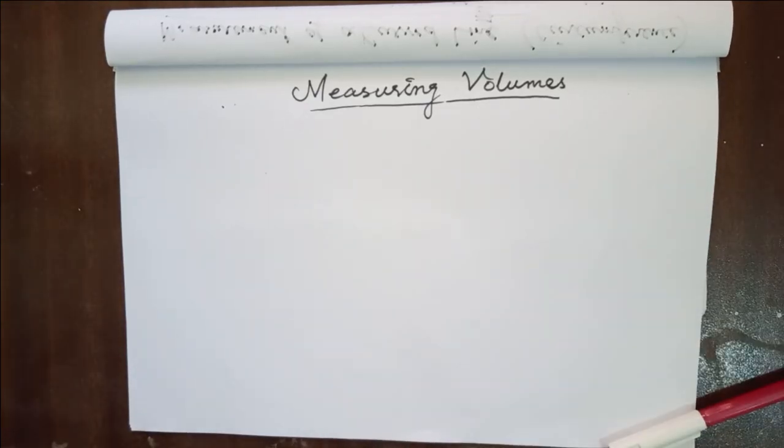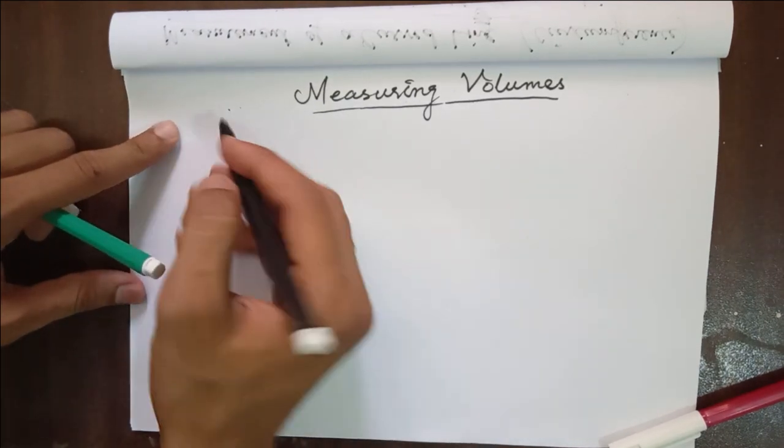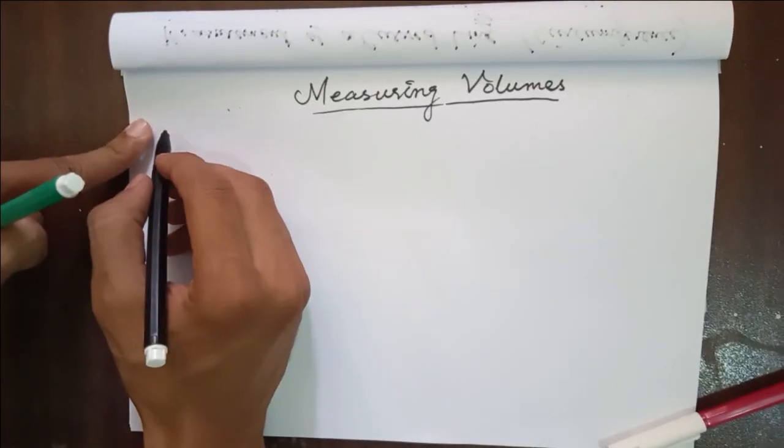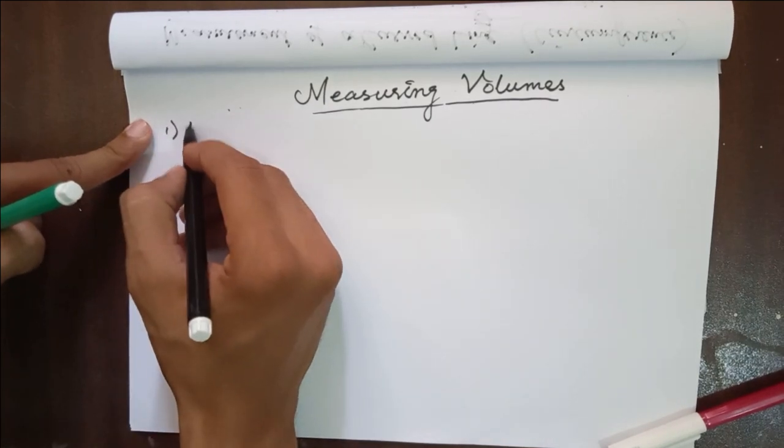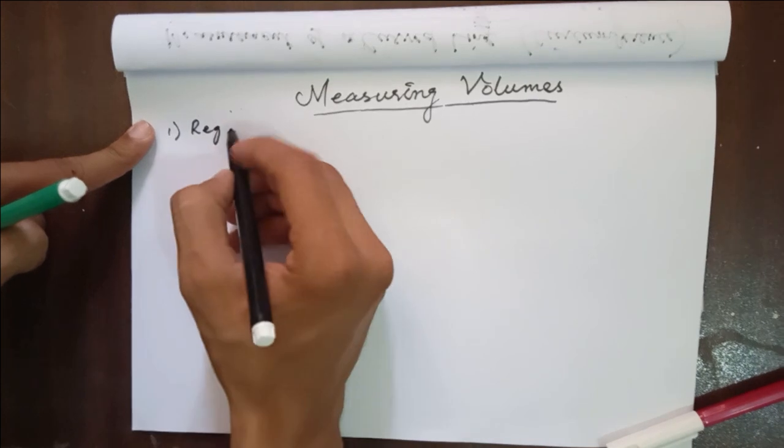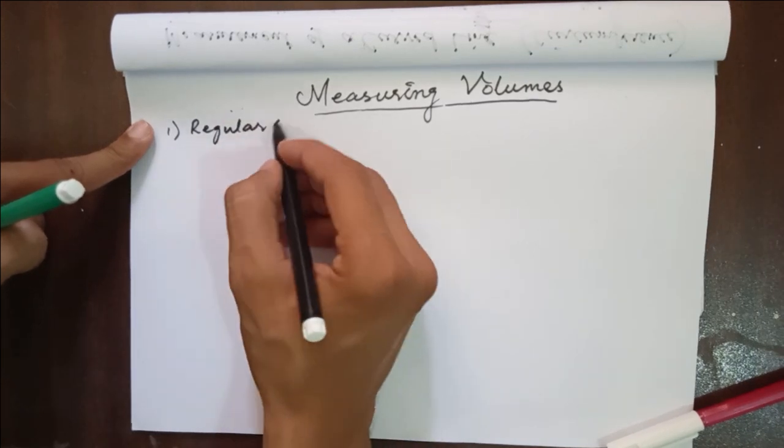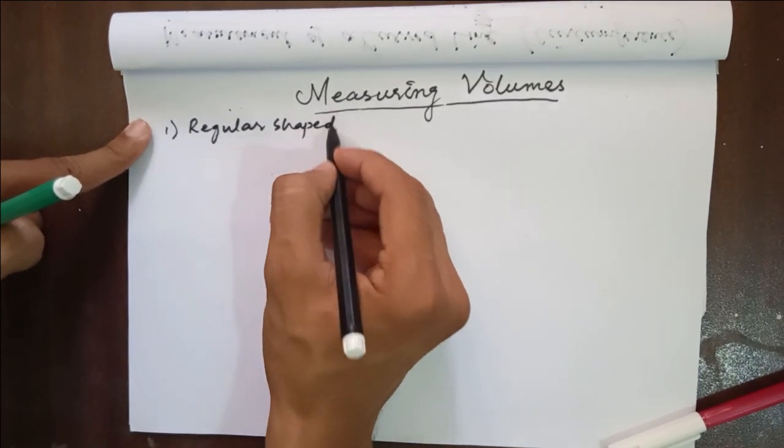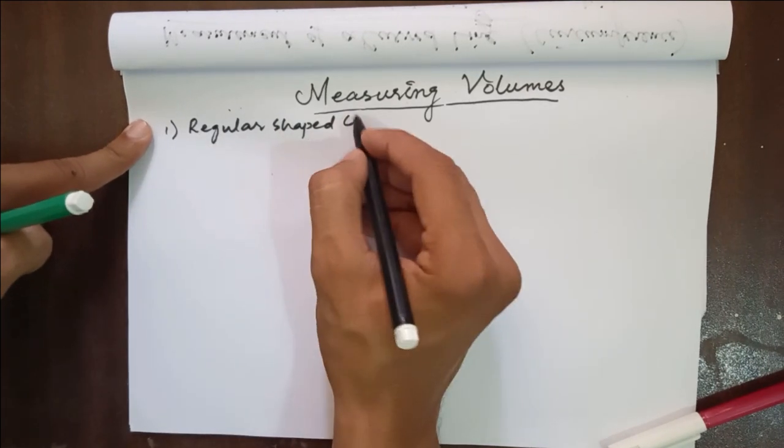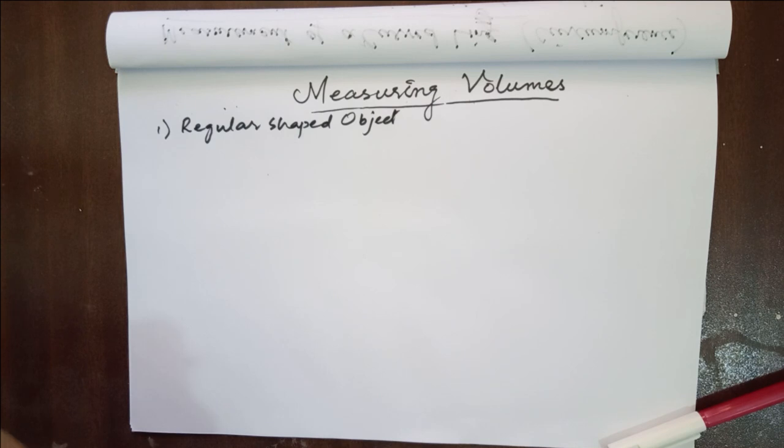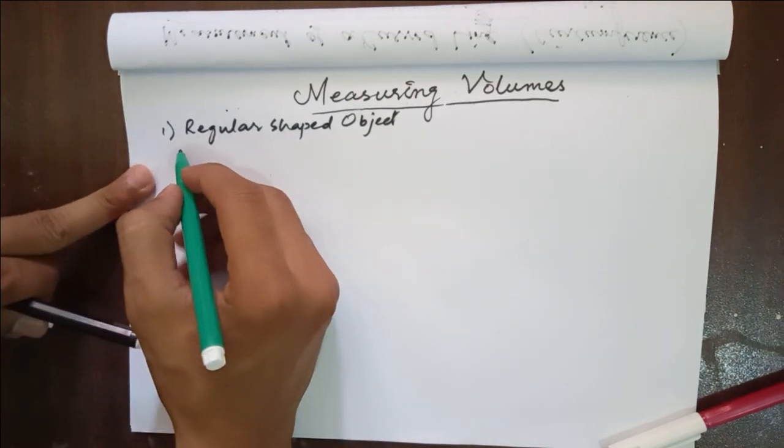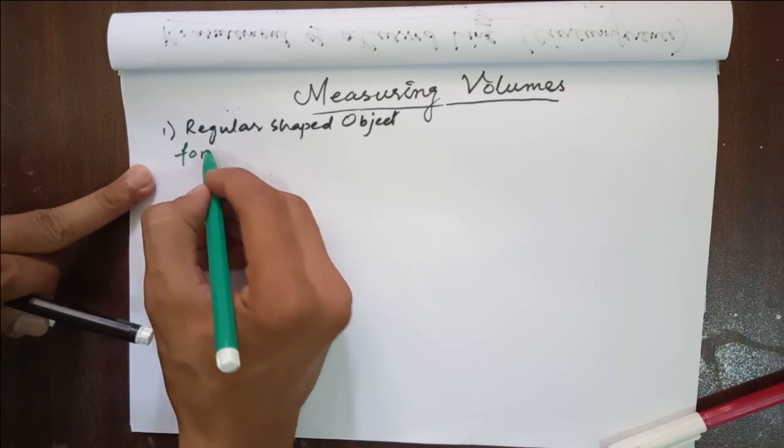The next topic we have is measuring volume. There are two cases in which we measure volume. One is when we have a regular shaped object. If we have a regular shaped object, its volume is calculated by means of a formula.